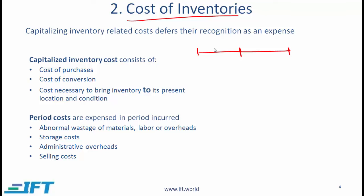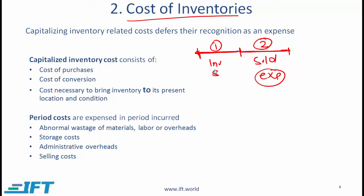Let's say that a company either builds or purchases inventory in period 1 and then this material is sold in period 2. Given that the inventory is sold in period 2, it makes sense for the expense to also be recognized in period 2. So if the money is spent on inventory in period 1, how do we make sure that the expense is shown in period 2? The way we do that is by creating an asset called inventory — this is called capitalizing inventory cost.